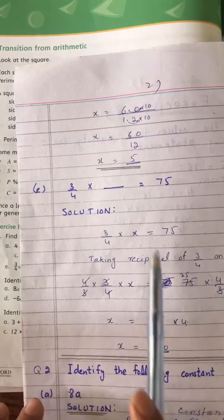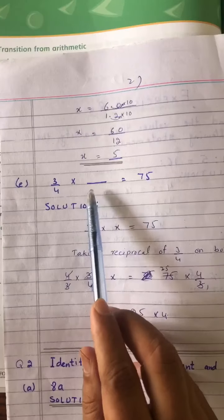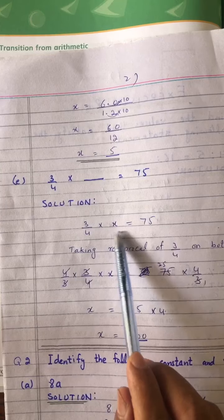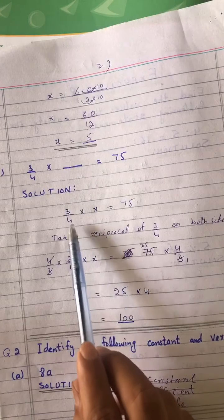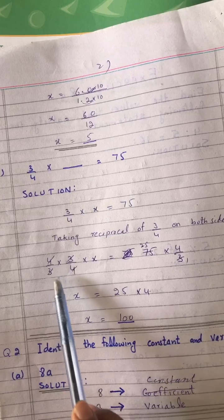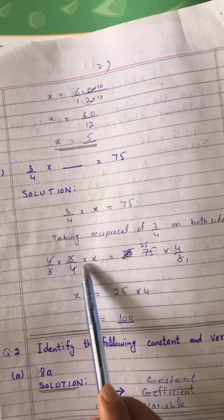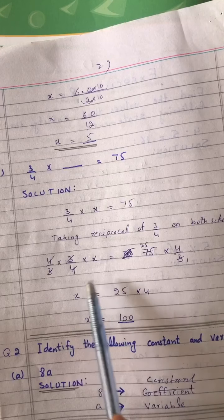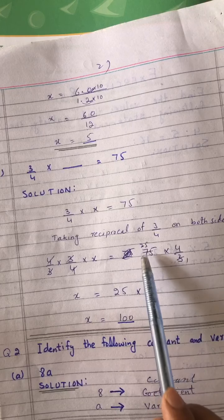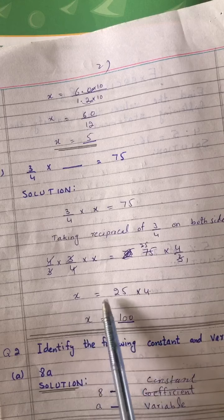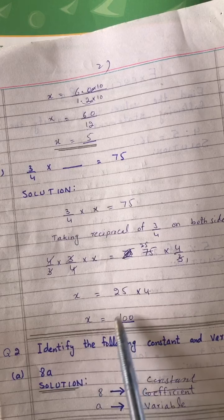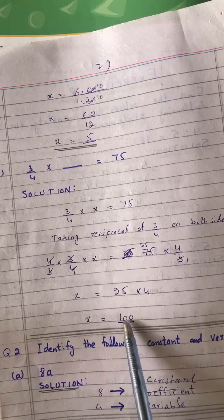Part E: 3/4 × X = 75. Solution: Taking reciprocal, 4/3 on both sides. 4/3 × 3/4 × X = 75 × 4/3 = 25 × 4 = 100. X is equal to 100.